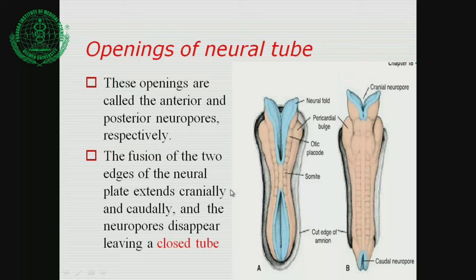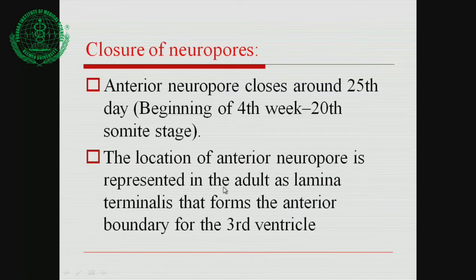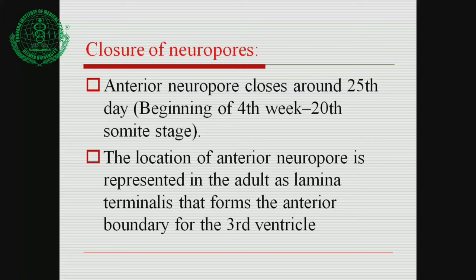Closure of the anterior neuropore occurs on the 25th day, the beginning of the fourth week, at the 20th somite stage. In the adult, the site of the anterior neuropore is represented by the lamina terminalis, a commissural plate that joins the two parts of the telencephalon — the cerebral hemispheres — and forms the anterior boundary of the third ventricle.